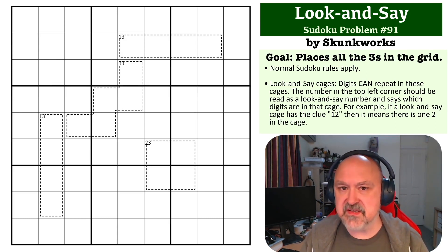And a 2-3 must contain two 3s, a 3-3 must contain three 3s, and so on. So look and say: when you see a clue, say it out loud, and that's what the cage must contain.